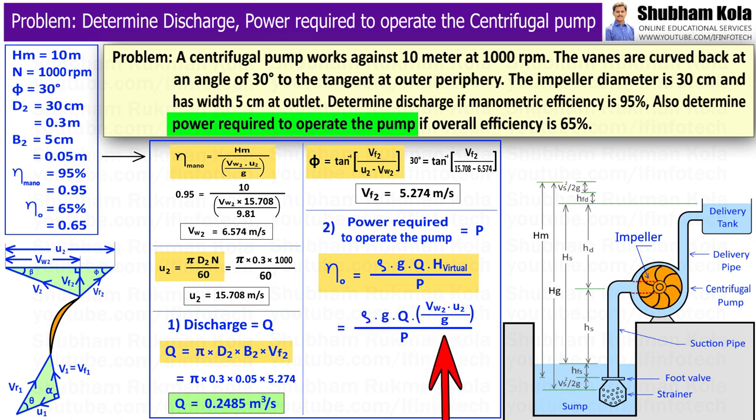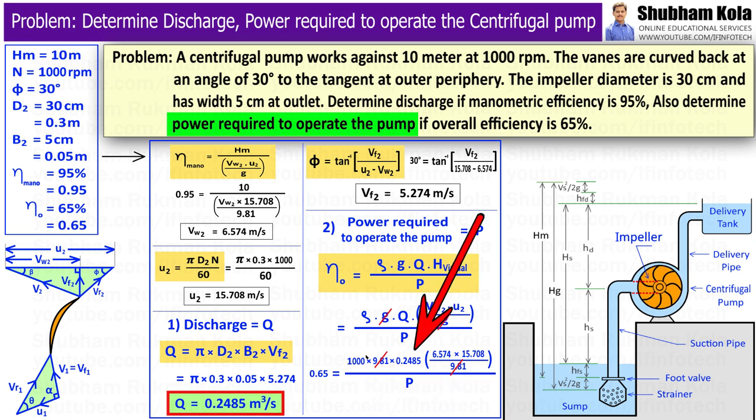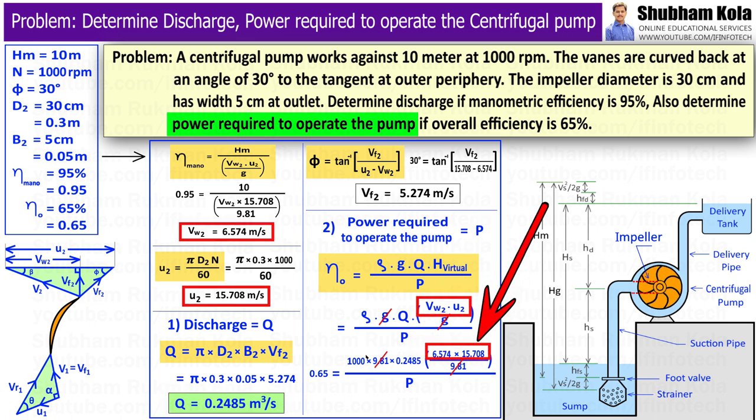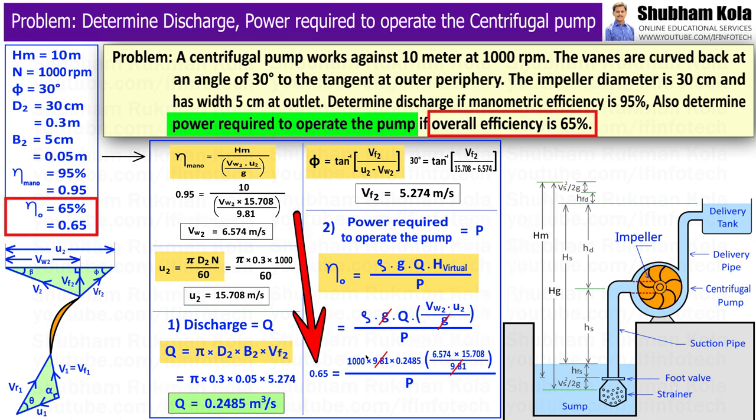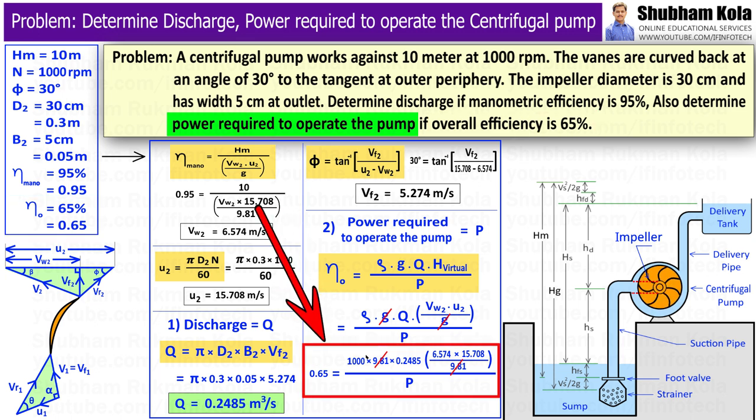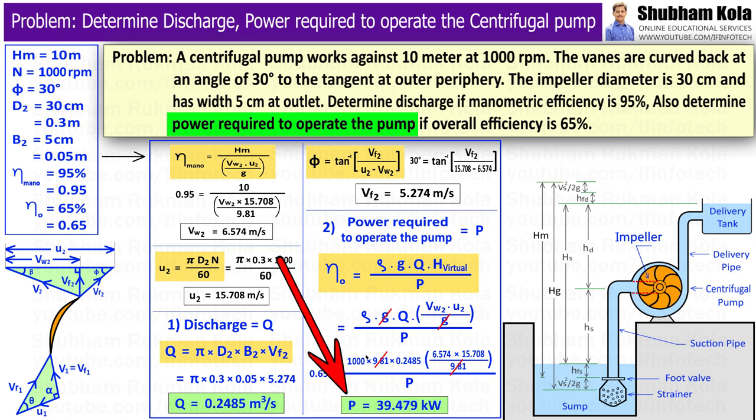Therefore, the formula of virtual head becomes Vw2 into U2 divided by g. Here, g gets cancelled and the values of Q, discharge rate, and Vw2 and U2, we have already calculated, and overall efficiency equal to 0.65. Therefore, by substituting all these values, we will get power required to drive the centrifugal pump as 39.479 kW.